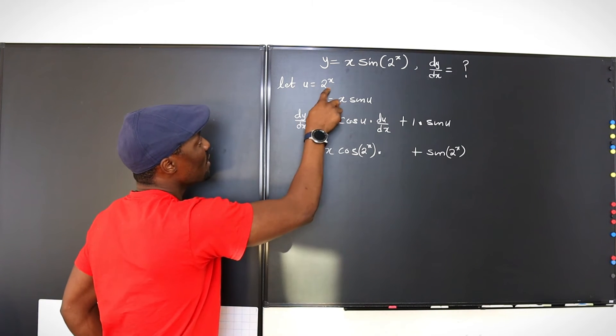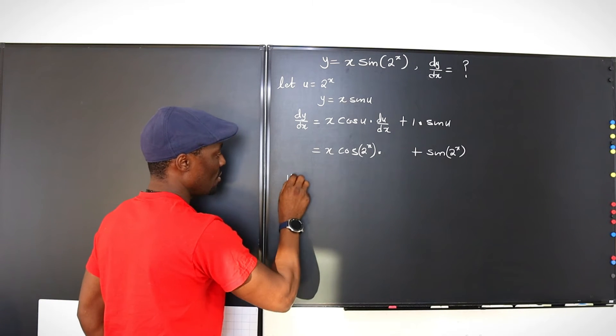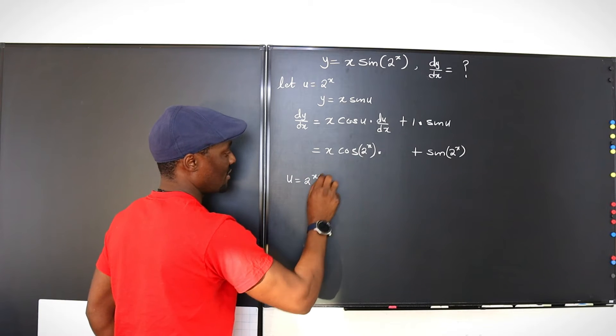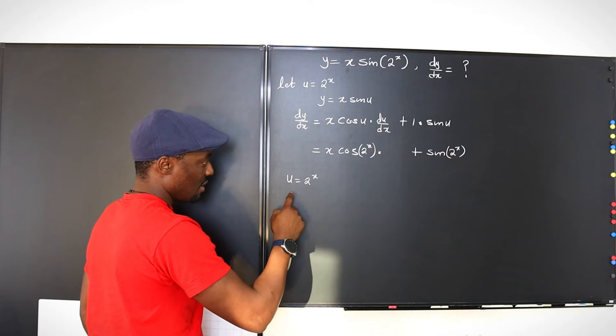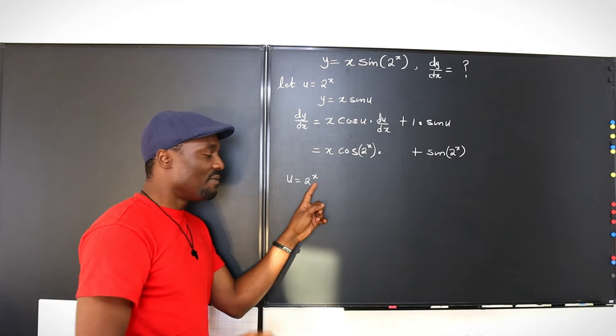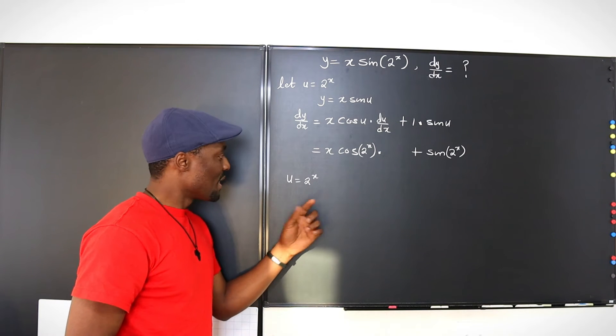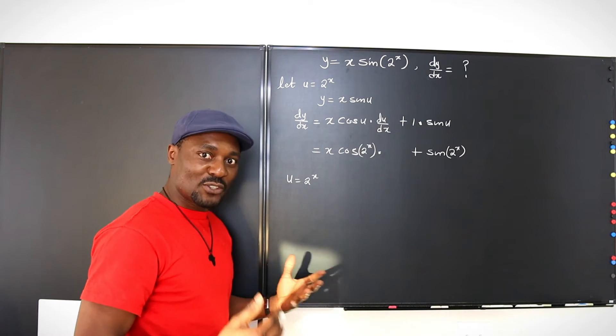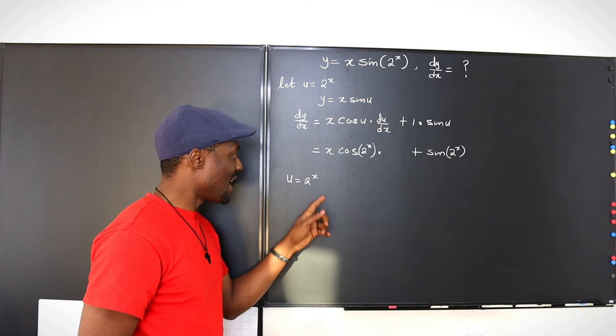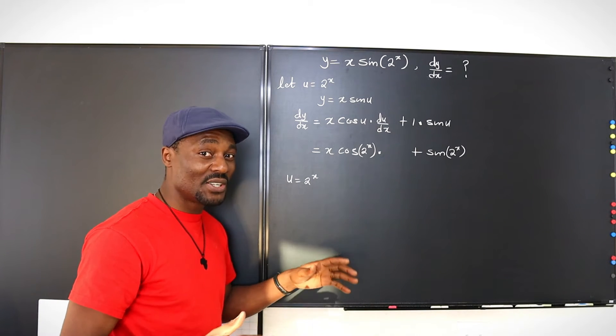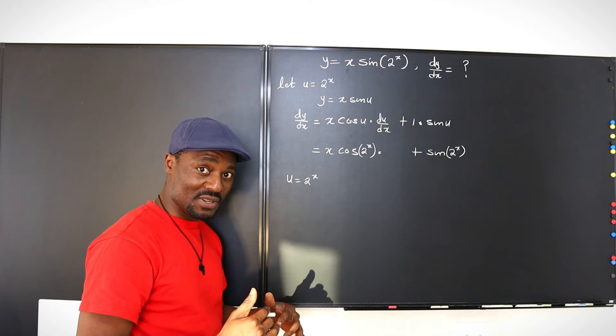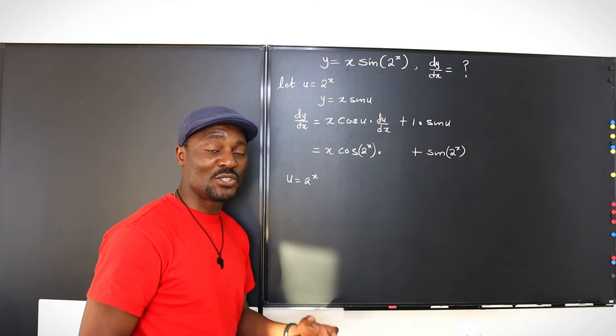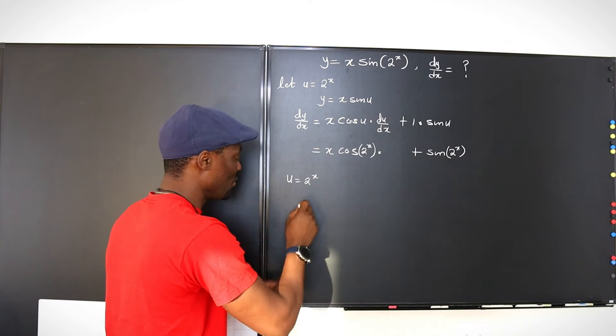So we say u equals 2 to the x. So u equals 2 to the x. And because you have the variable with respect to which you're doing the differentiation as part of the exponent, it's not good. You want to bring it down. And the good way to bring it down is to introduce logarithm.